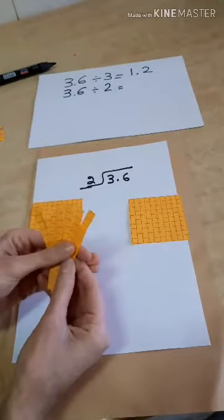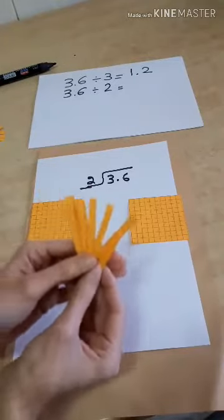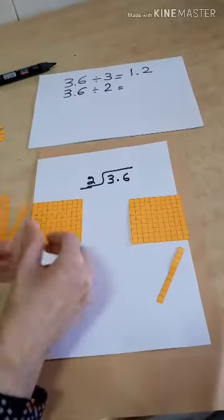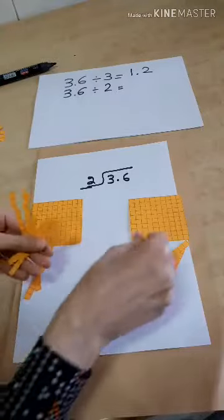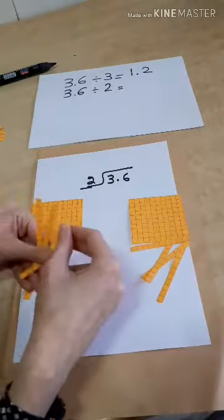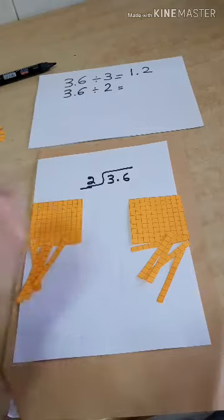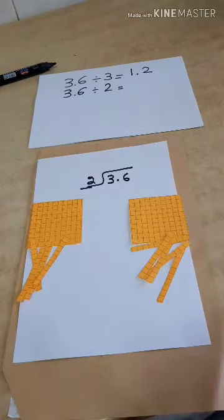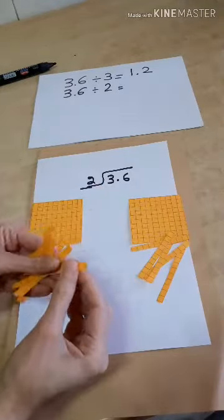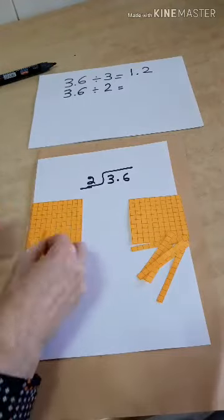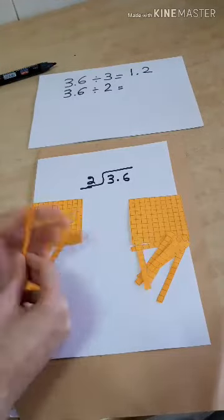Okay, now I want to divide these 10 tenths among these two groups. 1, 2, 3, 4, 5, and then I have the 6 tenths that I already had from the beginning. 1 here, 1 here, and 1 here.